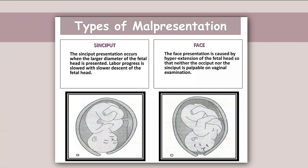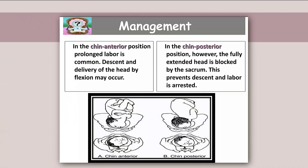Sinciput presentation occurs when the larger diameter of the fetal head is presented; labor progress is slowed with a slower descent of the fetal head. Face presentation is caused by hyperextension of the fetal head so that neither the occiput nor the sinciput is palpable on vaginal examination. In the chin anterior position, prolonged labor is common; descent and delivery of the head by flexion may occur. In the chin posterior position, the fully extended head is blocked by the sacrum, preventing descent and arresting labor.